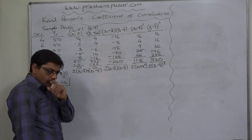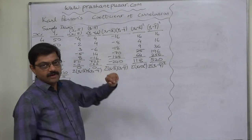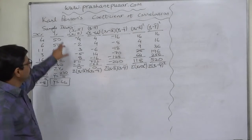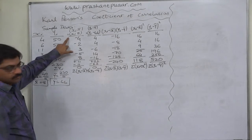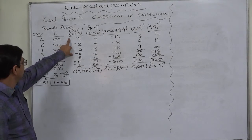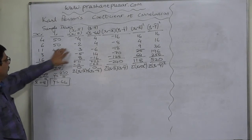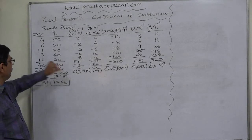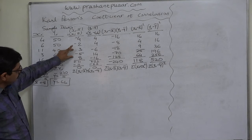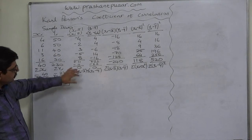To calculate covariance, we need x minus x-bar, y minus y-bar, and the summation of their products. For x minus x-bar (i.e., x minus 8): 4−8=−4, 6−8=−2, 11−8=3, 3−8=−5, 16−8=8. The positive values sum to 11, negative values sum to 11, and the total is 0.